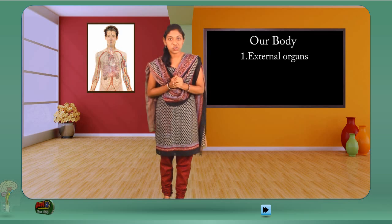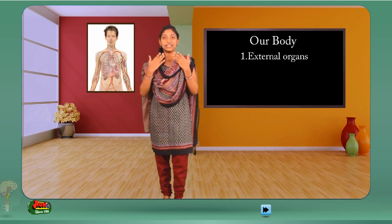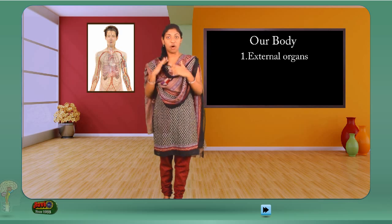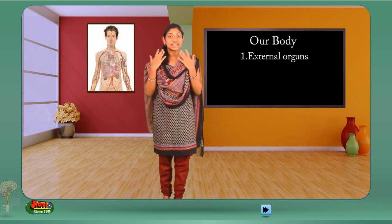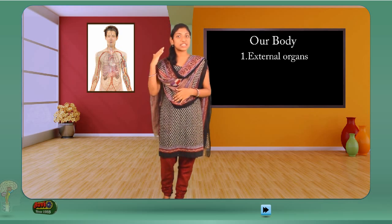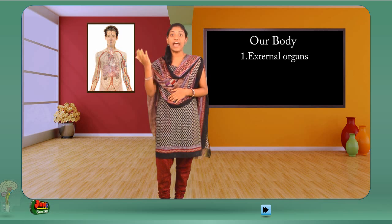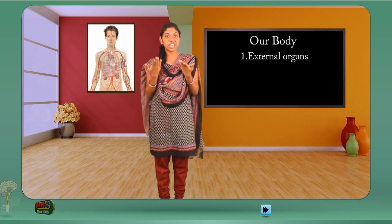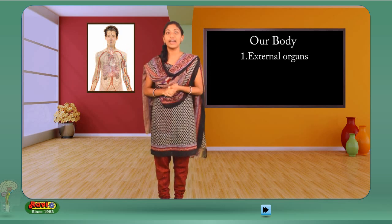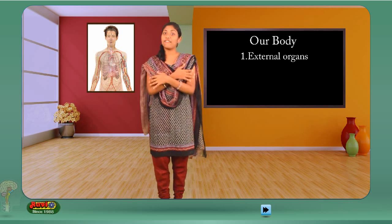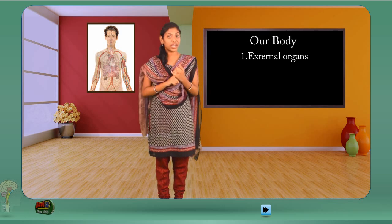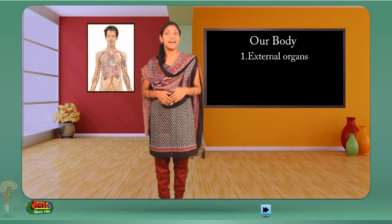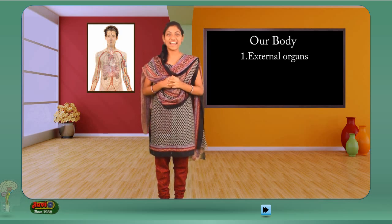Hello students! Our body is composed of organs that are part of different body systems that allow the human body to work. External organs are the organs which support any purpose and do any work. They can be seen with the naked eye externally without using any instrument. External organs like skin cover the entire body and protect from damage through temperatures, infections, etc. In this lesson, you will learn about our external organs.